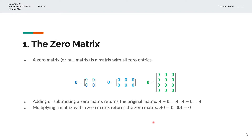If we're multiplying a matrix with a zero matrix, that will return the zero matrix. So, matrix A multiplied by the zero matrix returns the zero matrix. Or the other way around, the zero matrix multiplied by matrix A is the zero matrix. Remember, we'll need to check the order of these two matrices to determine if they can be multiplied.